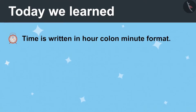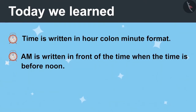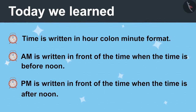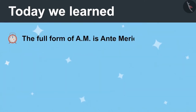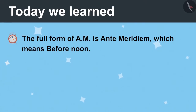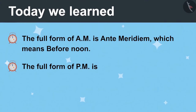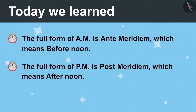Today we learned that time is written in the form of hour colon minute. AM is written in front of the time when the time is before noon. PM is written in front of the time when the time is after noon. The full form of AM is Ante Meridiem, which means before noon, and the full form of PM is Post Meridiem, which means afternoon.